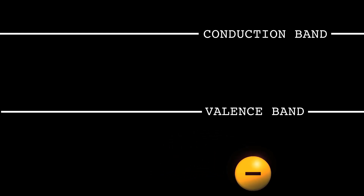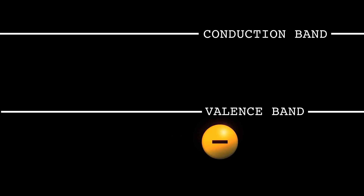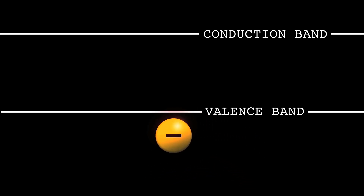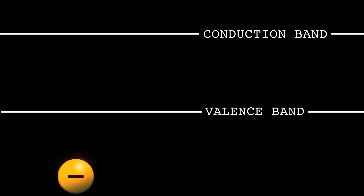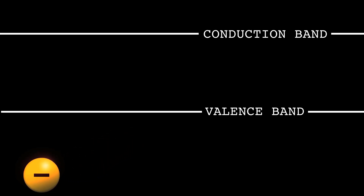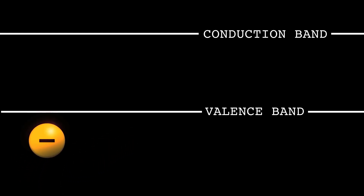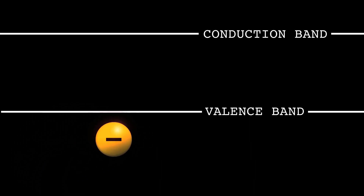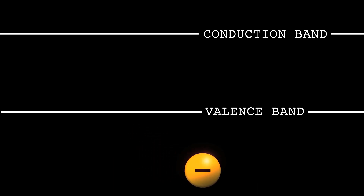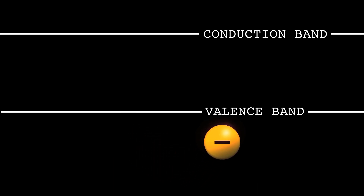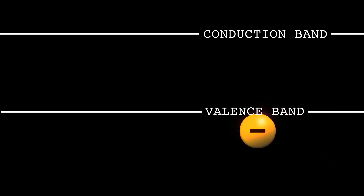The valence band is the highest energy level an electron can be at in this material. The next level up above this gap is called the conduction band. To be an electron that can be taken out of the material, I have to make my way into that conduction band.